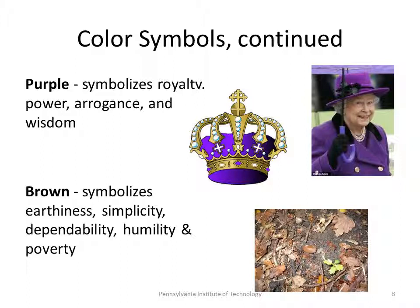Purple is the color of royalty. It's also the color of power, arrogance, and wisdom. This lady on the right here is Queen Elizabeth II, and you often see her in purple. You'll often see crowns depicted as purple because this is a pretty well-known symbol. Brown symbolizes earthiness, simplicity, dependability, humility, poverty — kind of that poor but honest perspective.